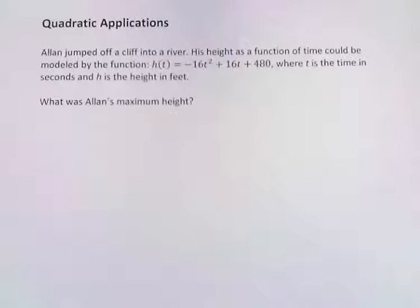So in our example, we have Allan jumped off a cliff into a river. His height as a function of time could be modeled by the function h(t) = -16t² + 16t + 480, where t is the time in seconds and h is the height in feet. What was Allan's maximum height?